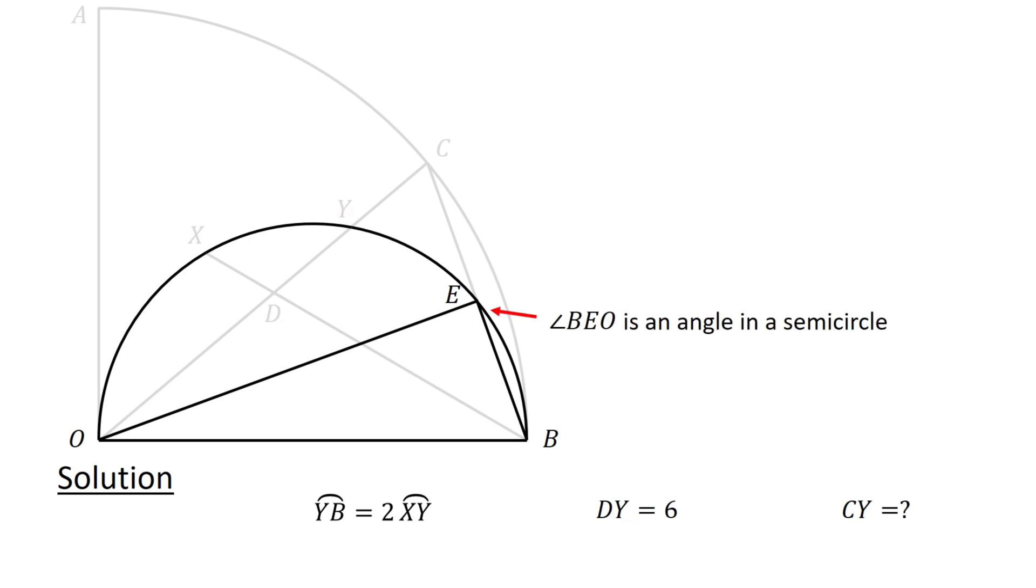Angle BEO is an angle in a semicircle. Recall that an angle in a semicircle is a right angle. Therefore, angle BEO equals 90 degrees.